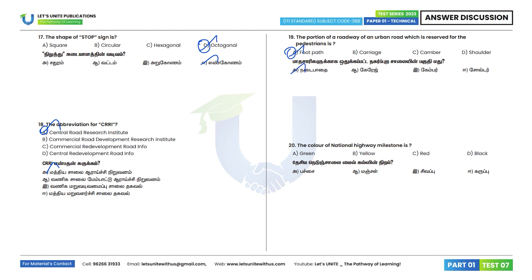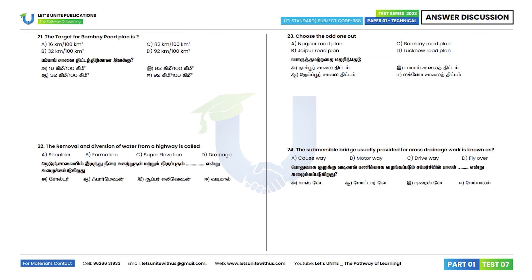20th question: The color of the national highway milestone — Option B is the correct answer.